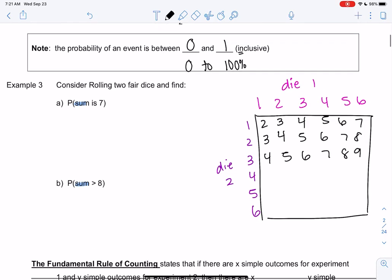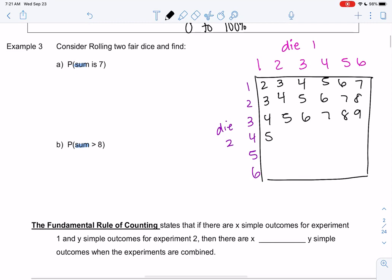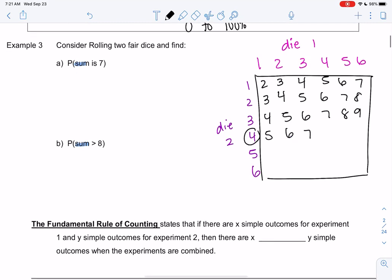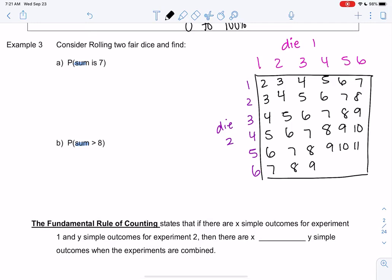I've done this a lot, so I can do it really fast. So pause if you need to. 4 plus 4 is 8. 4 plus 5 is 9, in case we still haven't caught on. 6, 7, 8. And then the largest sum is 12, when you get a 6 and a 6.